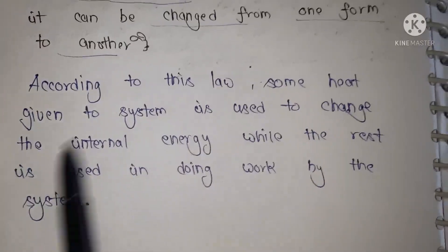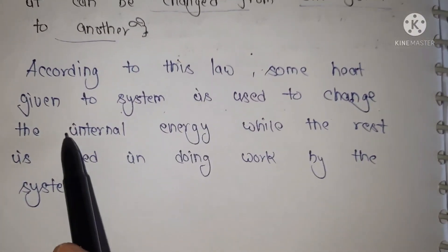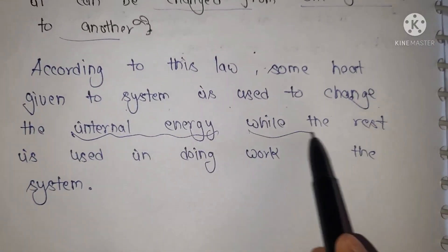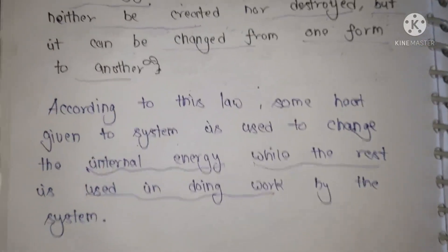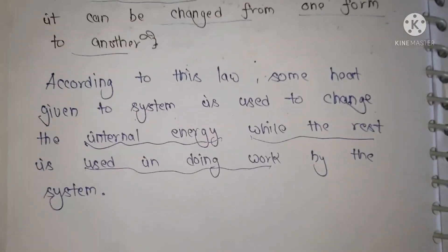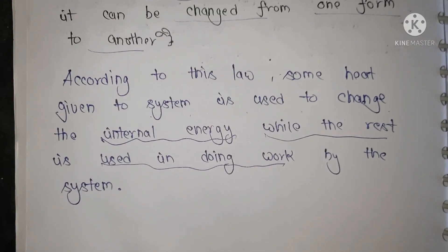According to this law, some heat given to the system is used to change the internal energy while the rest is used to doing work. When we give energy to any system, we will change internal energy plus the rest of energy is used to doing work.